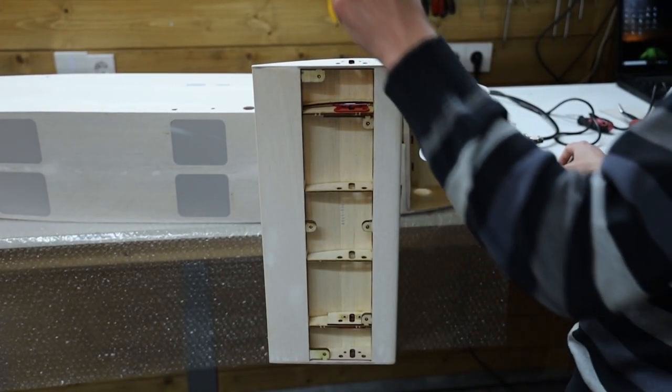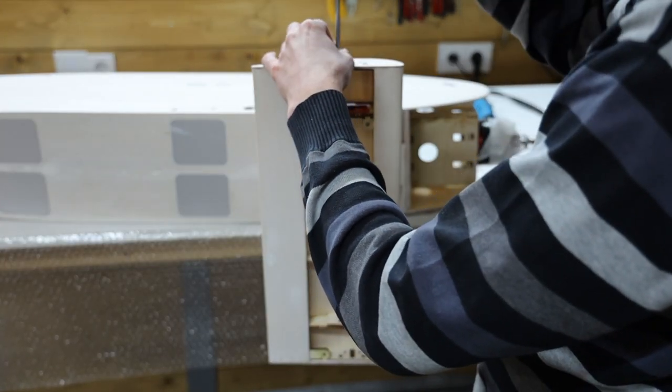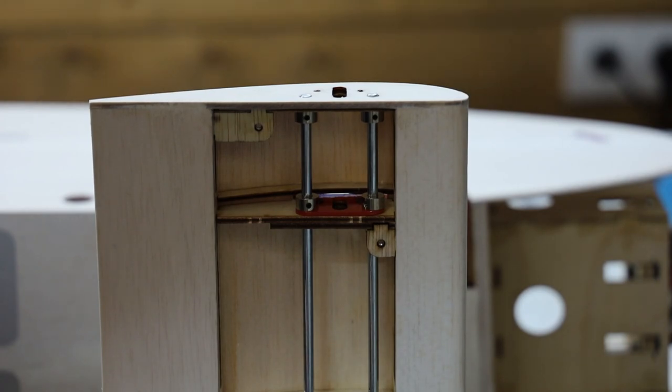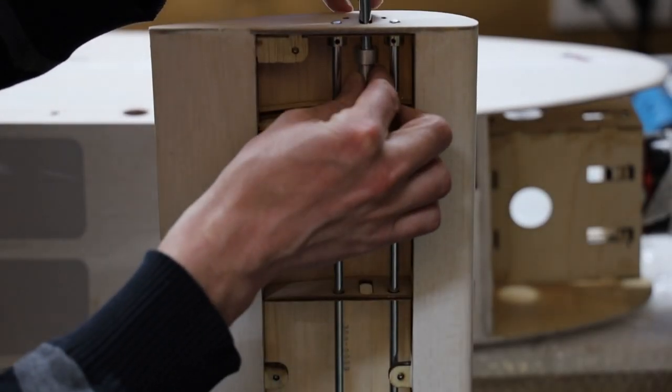After all the hinges were finished, it was time for the landing gear. The axles come with a flat spot for the wheel collars. Always use Loctite to prevent the wheel collars from coming loose.